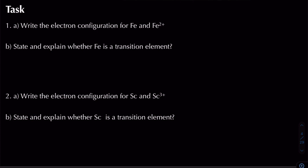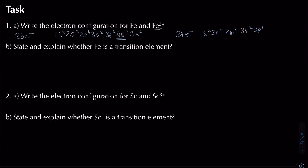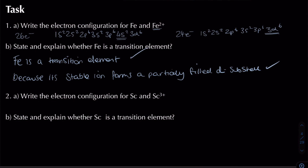Task: write the electron configuration for iron and Fe2+. Iron has 26 electrons: 1s2 2s2 2p6 3s2 3p6 4s2 3d6. For Fe2+, we lose two electrons from 4s, giving 24 electrons: 1s2 2s2 2p6 3s2 3p6 3d6. Iron is a transition element because its stable ion has a partially filled d subshell.